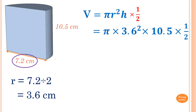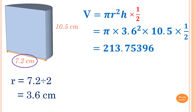So now, pi times 3.6 squared times 10.5 times 0.5, which gives me 213.75396 and so on.